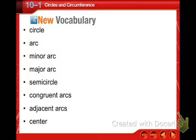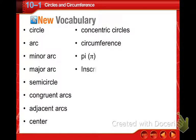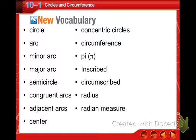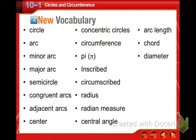So some vocab words for today. This is not all of them. There are some more. Circle, arc, minor arc, major arc, semi-circles, congruent arcs, adjacent arcs, center, concentric circles, circumference, pi, inscribed, circumscribed, radius, radian measure, central angle. You have three more: arc length, chord, and diameter. Some of those you probably already know what they are. Should be tomorrow, hopefully by Thursday I'll get them back to you.